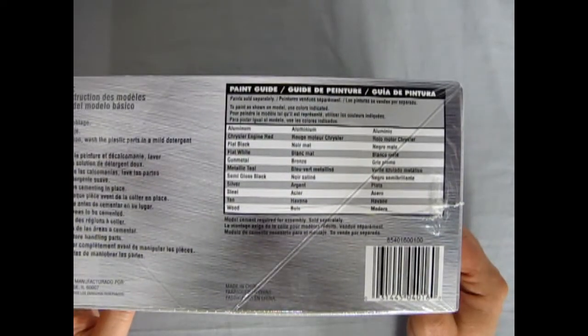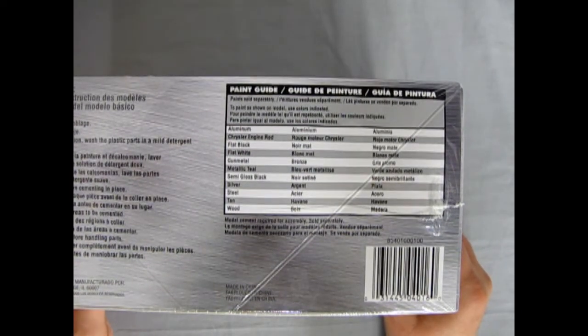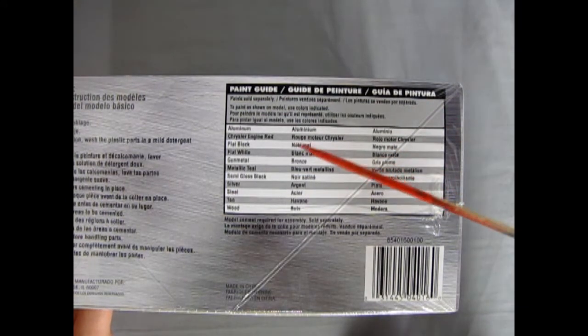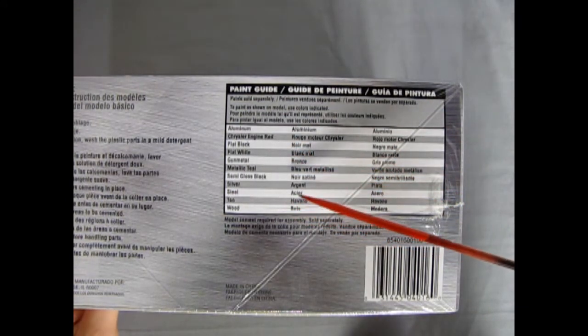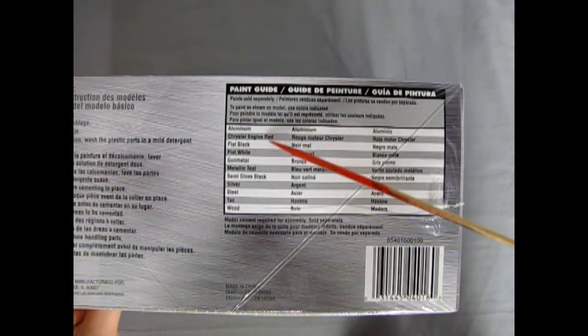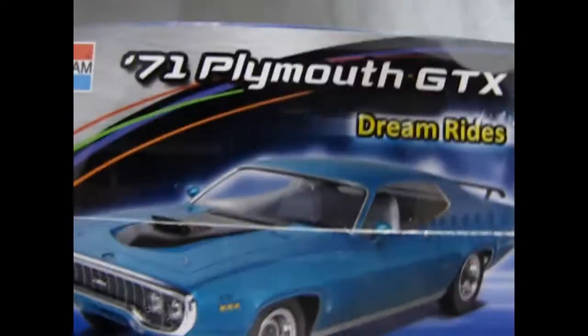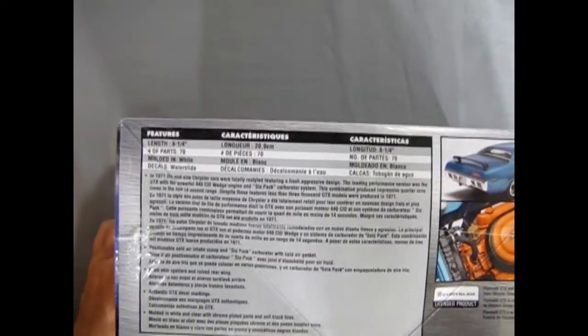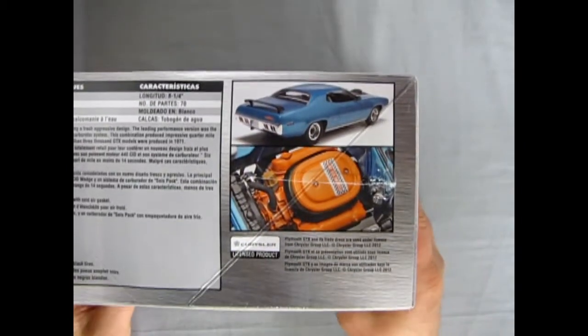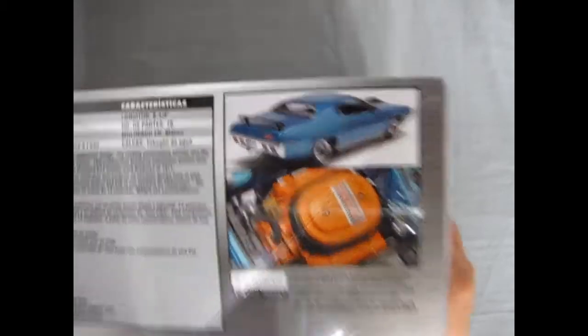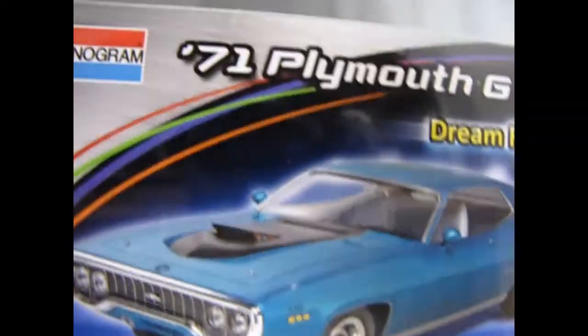There's all the write-up from the model as well as a paint guide right on the side of the box, which is nice for when you're in the hobby shop. You don't want to go home, open up the instructions, then come back to the store - all the colors are right there. The end of the box looks like the lid. We get more write-up as well as this nice image of the 440 six-pack and the back of the car. Very nice car for its era.